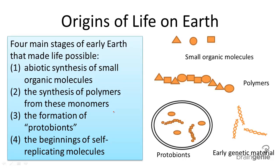Let's take a look at the first major stage of early Earth that made life possible. This was called abiotic synthesis of small organic molecules, meaning there were non-living factors in place that helped small organic molecules form.